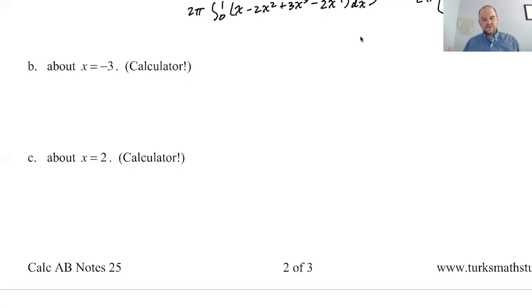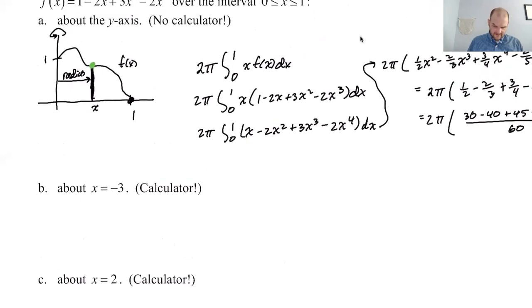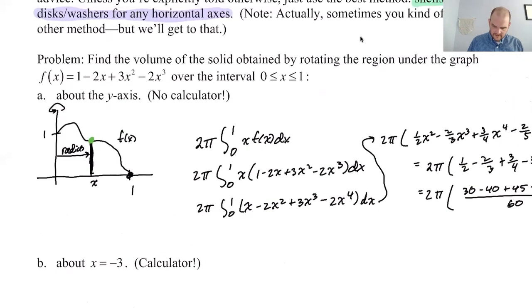All right, this is calc AB, notes 25, still on page 2. We are revolving this function, which is f(x) = 1 - 2x + 3x² - 2x³, around whatever given axis we have.